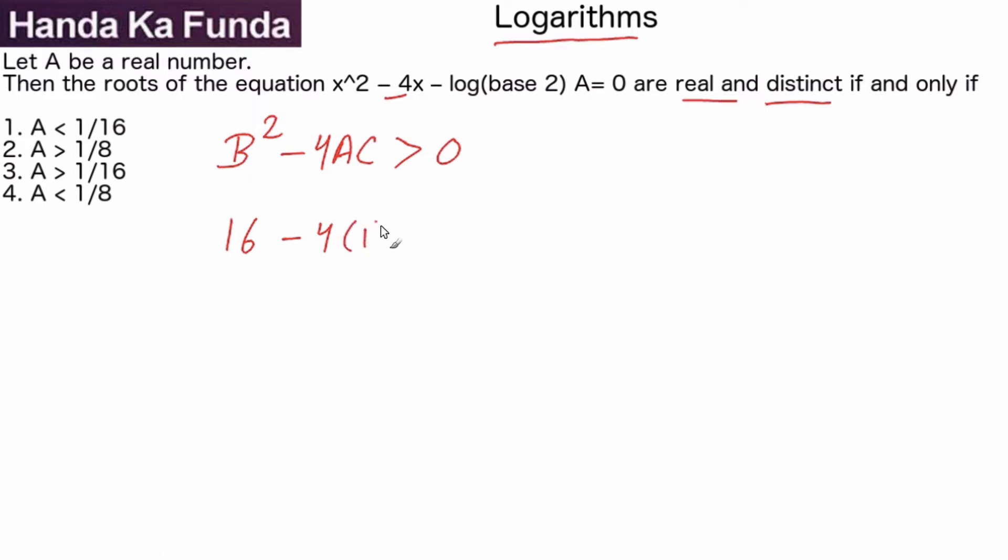We want this to be positive, which means 16 + 4log₂(A) > 0. This means 4log₂(A) > -16. So I can rewrite this as log₂(A⁴) > -16.